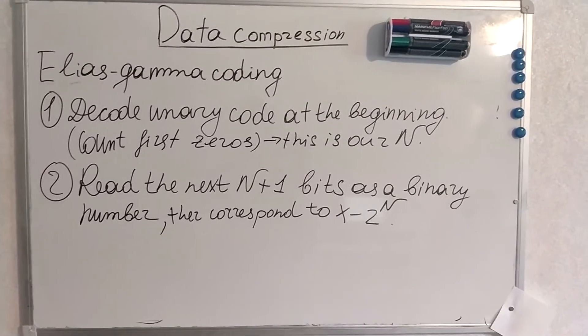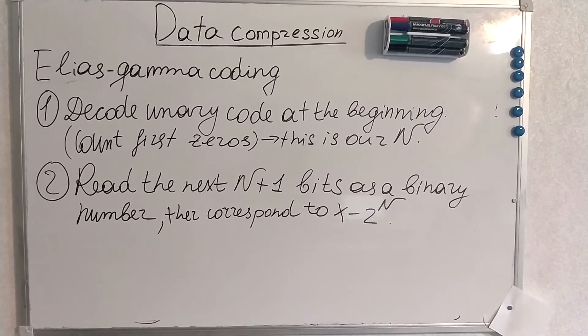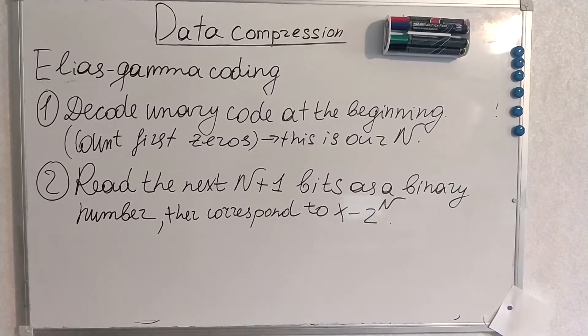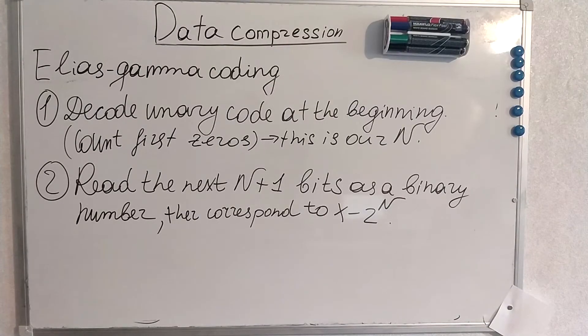It's just the number of first zeros we face. And then we read the next N+1 bits as a binary number that corresponds to X minus 2 to the power of N.